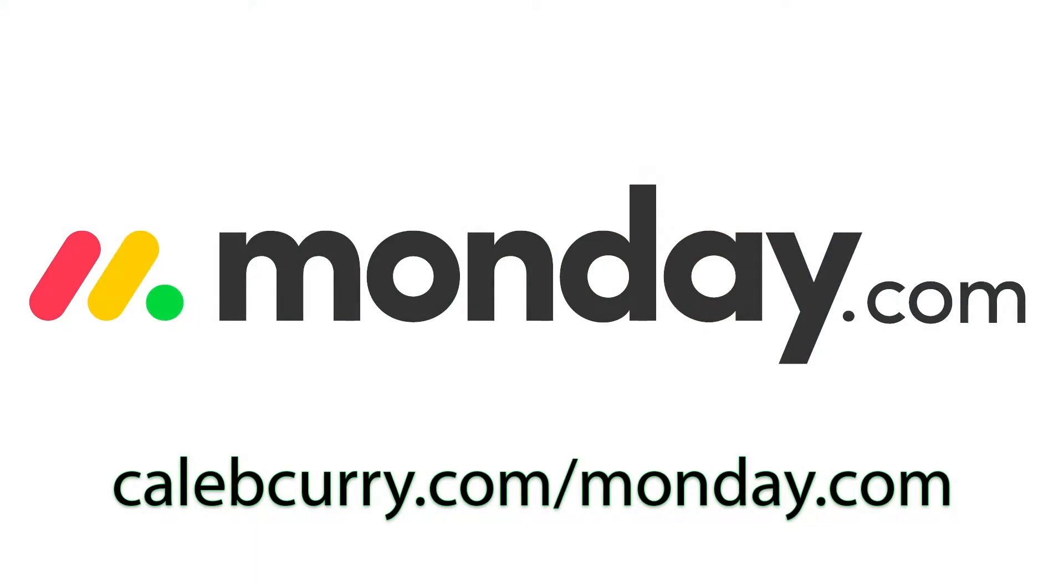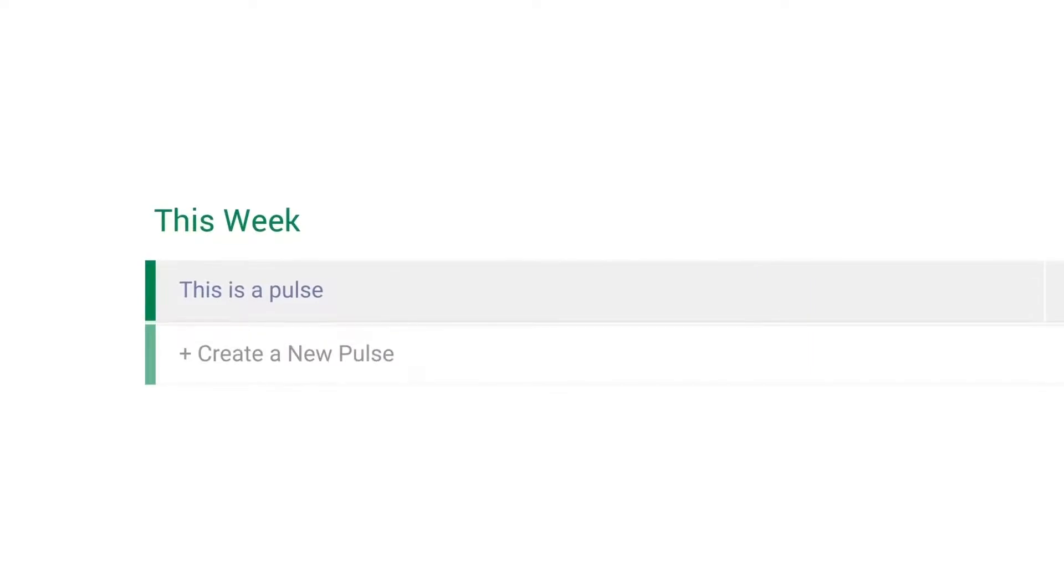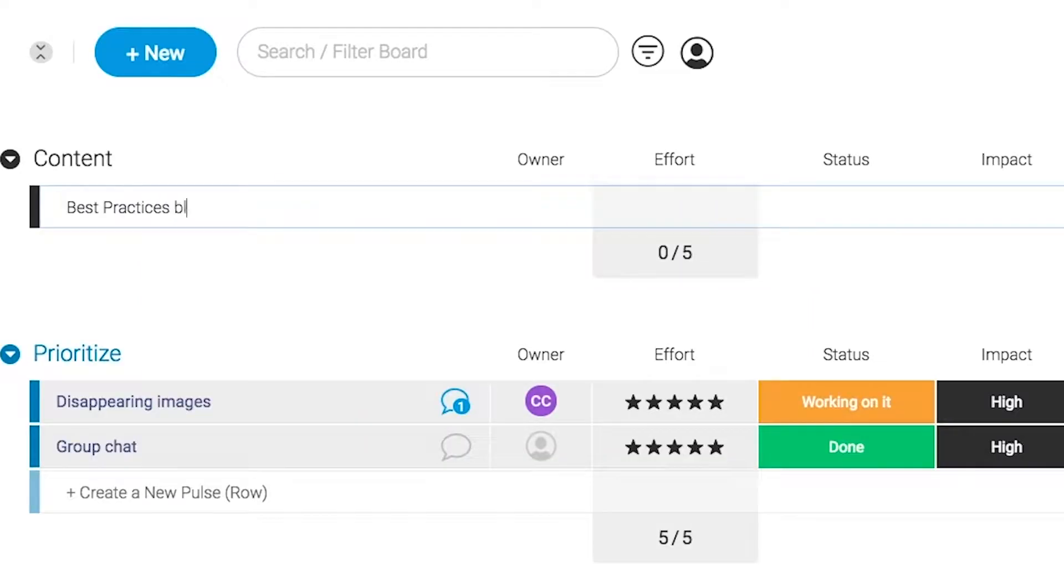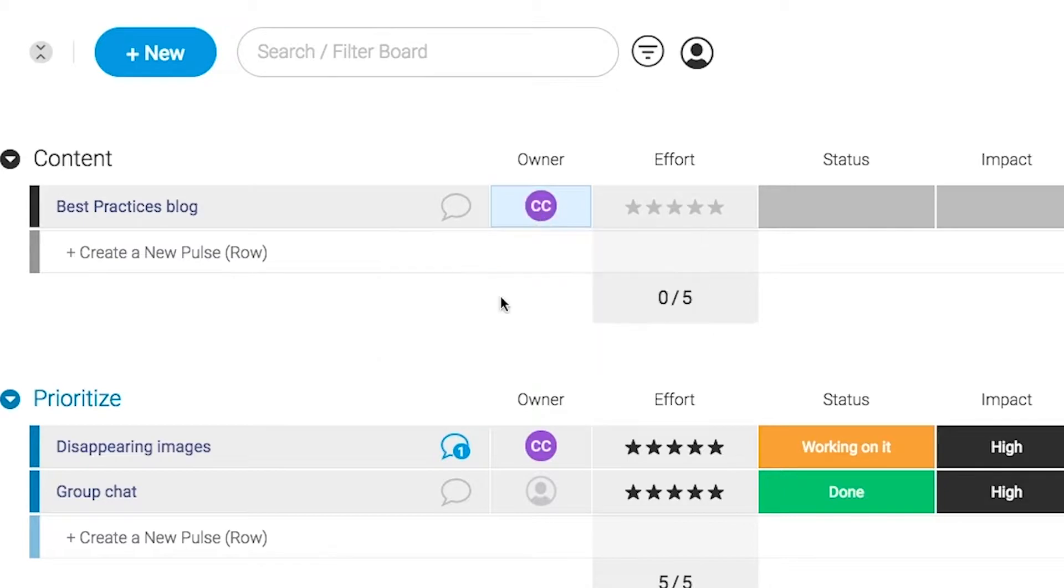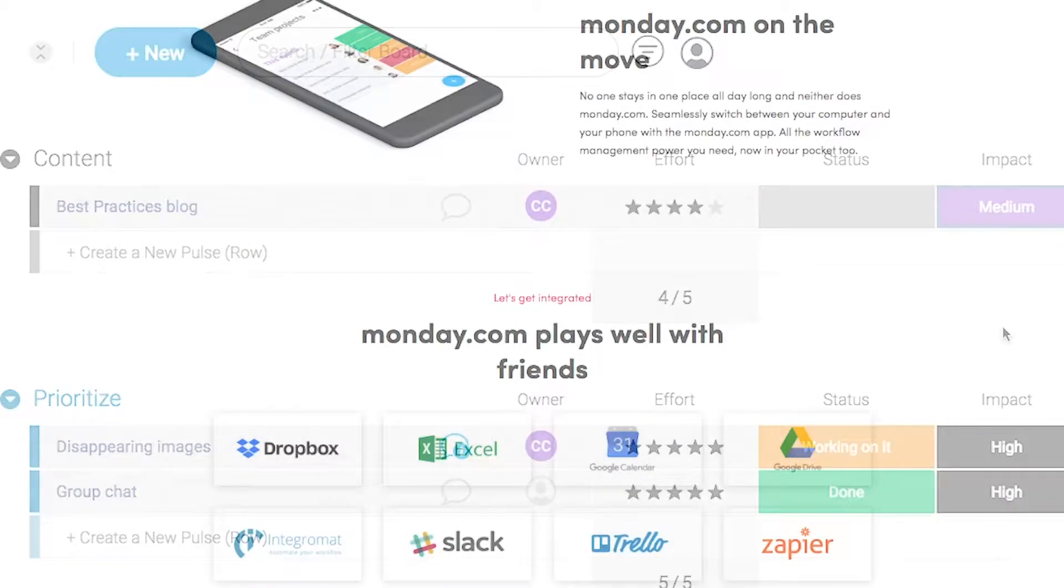Monday.com is your visual project management solution. This is the tool that allows you to see where every task or project stands with a single glance. With a fully customizable interface, you can create the exact workflow that you need for you and your team to get stuff done. Monday.com is available on mobile and integrates well with some of the most popular tools out there. So get your life in order by giving it a try for free. Link in the description.